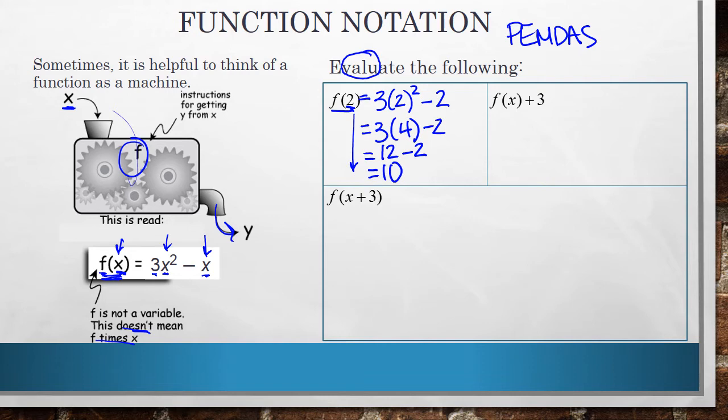So the second thing you see here is f of x plus 3, and notice that plus 3 is on the outside of the function. So this is just saying take your function, which is 3x squared minus x, and add 3 to it. That's all that that says to do, and there's nothing we can do from there.